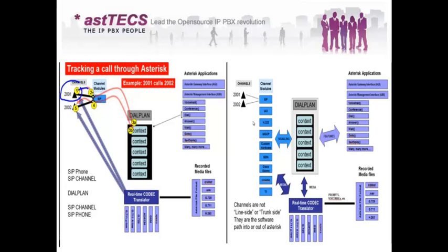So the SIP phone makes a call, the SIP channel module handles the call and passes it to the dial plan to the particular context. In that dial plan context the Asterisk Application API is used. So here two APIs have already been used: the SIP channel in the Channel API, and in the dial plan the Dial application handled by the Application API. Then we dial out to 2002.